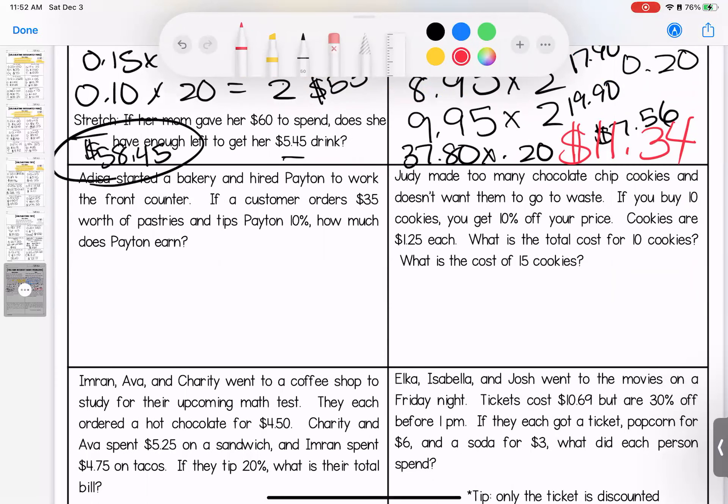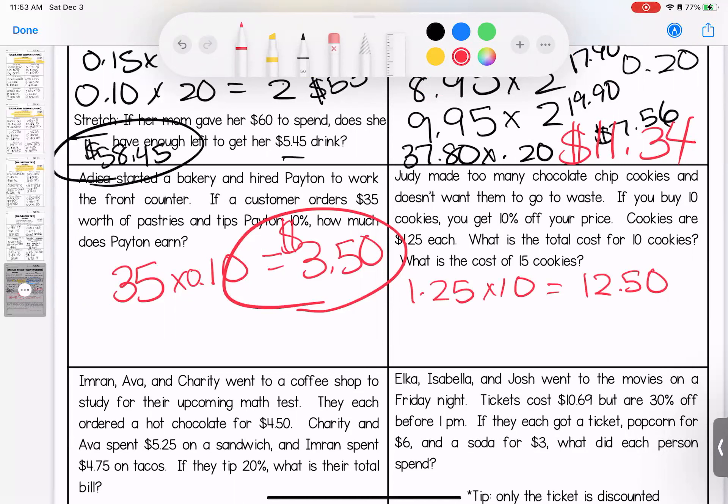All right, let's talk about Adisa. Adisa started a bakery and hired Peyton to work the front counter. If a customer orders $35 worth of pastries and tips Peyton 10%, how much did Peyton earn? Peyton earned $3.50 tip on that order. Judy made too many chocolate chip cookies and doesn't want them to go to waste. If you buy 10 cookies, you get 10% off your price. Cookies are $1.25 each. What is the total cost for 10 cookies? First we would need to figure out what she's paying. Multiplying that by 10, we get $12.50. Then she gets 10% off. She gets a discount of $1.25, which means she essentially gets one cookie free. So in total, she is paying $11.25 for 10 cookies.